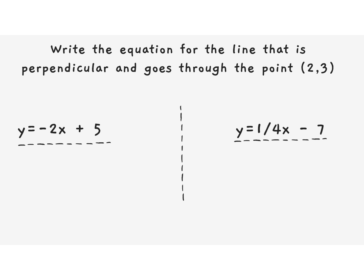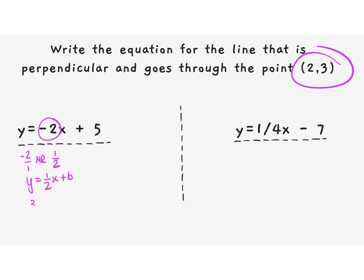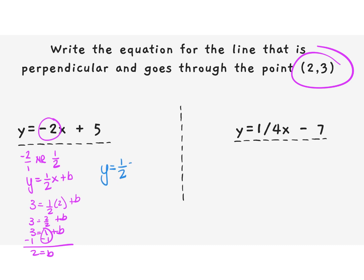To finish this up, we're going to try a couple where we substitute in the value. We need to rewrite our equation with the correct negative reciprocal slope. Our slope is negative two over one, so the negative reciprocal is positive one-half. Our equation is y equals one-half x plus b. Using the point: 3 equals one-half times 2 plus b, so 3 equals 1 plus b, giving us b equals 2. Our new equation is y equals one-half x plus 2.